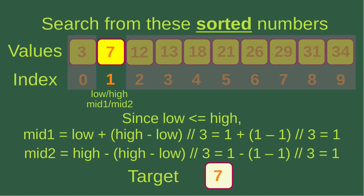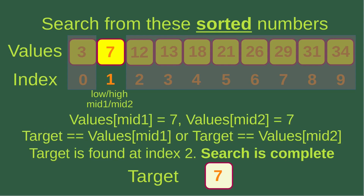Since the low index is still smaller than or equal to the high index, I can update both mid one and mid two values. So now they both equal one according to the formulas shown on the slide. Mid one and mid two indices are both equal to one, so we constrain the interval of investigation to just one value. We can see that mid one corresponds to number seven, and mid two also corresponds to number seven. So the target is equal to the value at mid one and mid two, and we say that the target is found at index one.